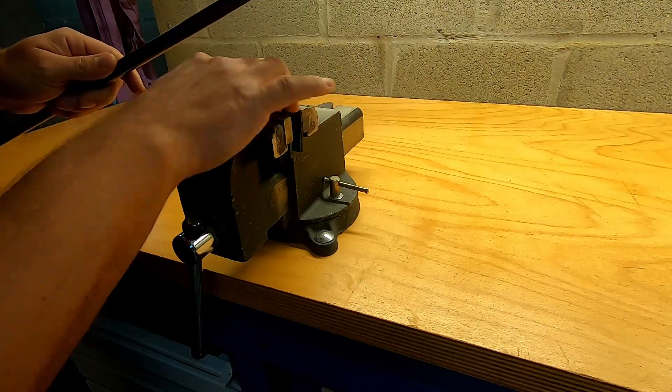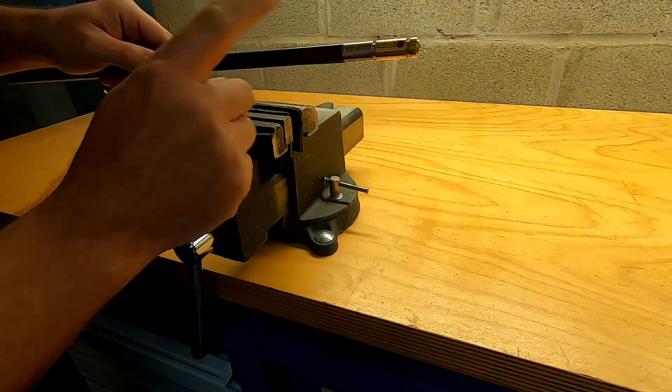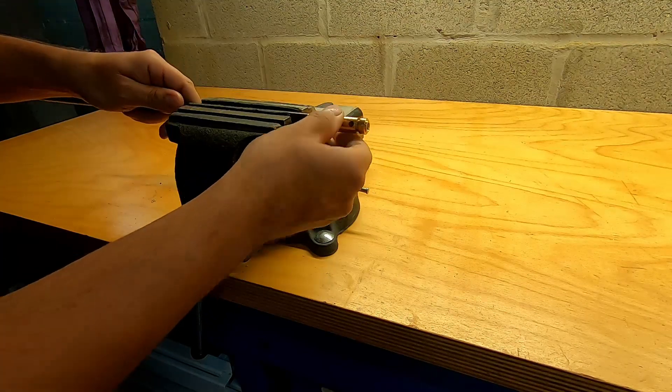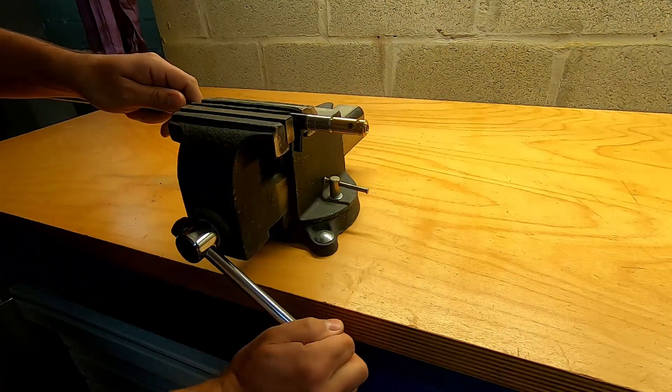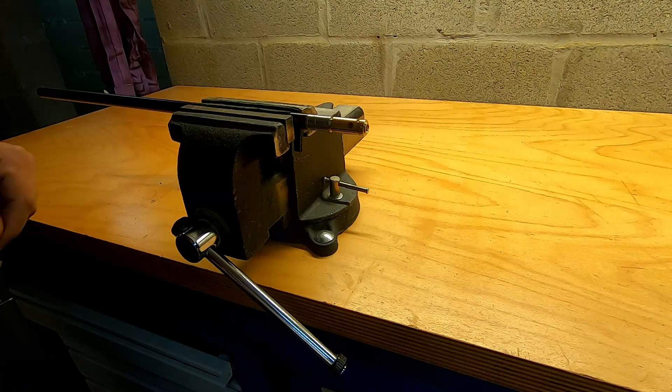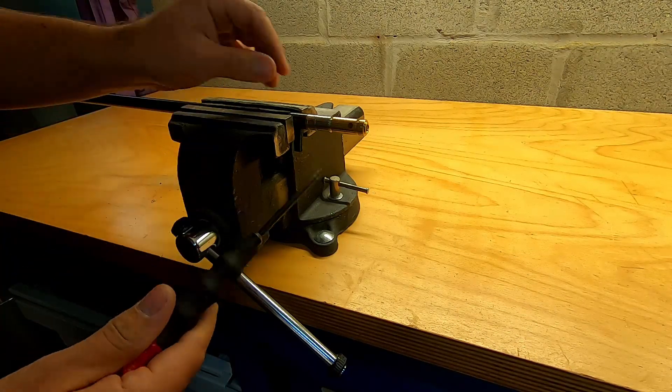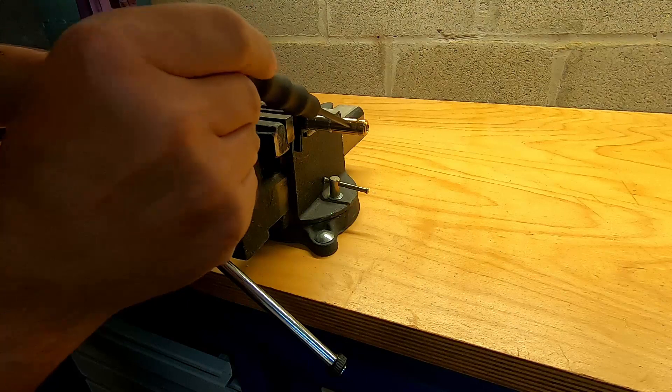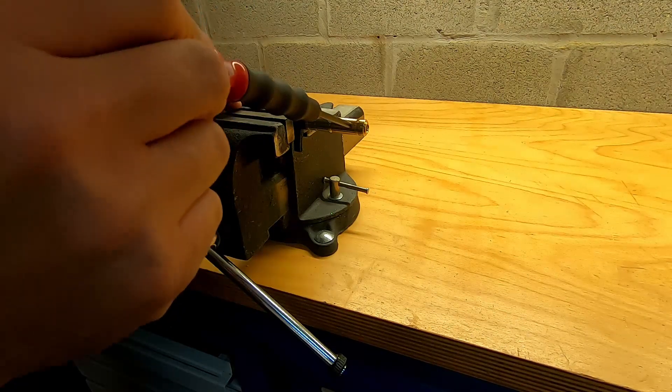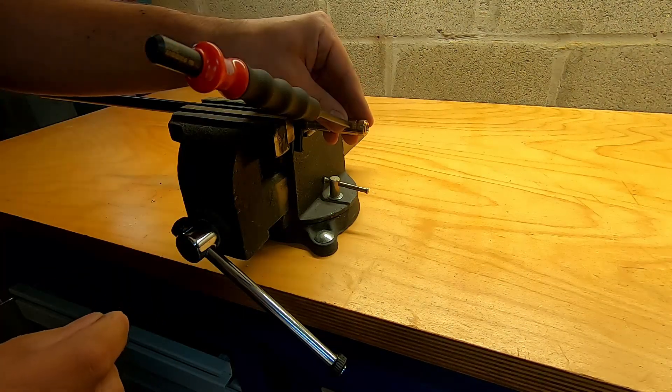Now when you put it in the vise, always make sure you have some padding on the inside so you don't damage your pellet liner when you clamp it down. Then I use like a punch or something that fits nicely into the transfer port so we can have some leverage on undoing it when we heat it up.